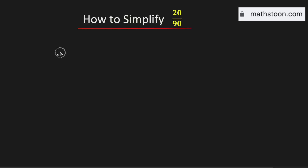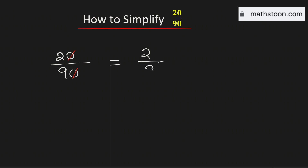In this video we will simplify the fraction 20 over 90 in its simplest form. Both numbers have a last digit of 0, so to simplify we will cancel this 0. Therefore this is now equal to 2 over 9.